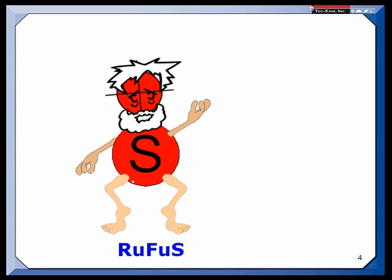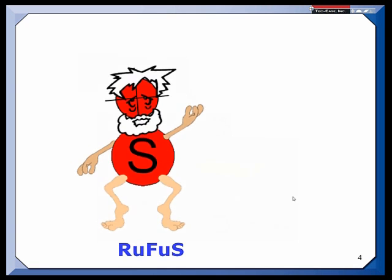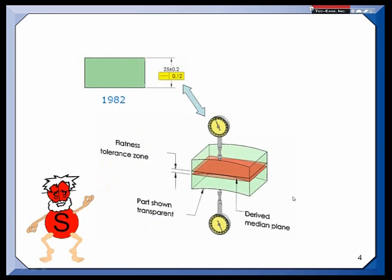Now, those of you familiar with our training materials might recognize this little guy as Rufus. We made up some characters using the modifiers: we have Max, we have Lisa, and then we have Rufus. The S in a circle used to stand for regardless of feature size, but now that's the default condition for all geometric tolerances, so the symbol has gone away.